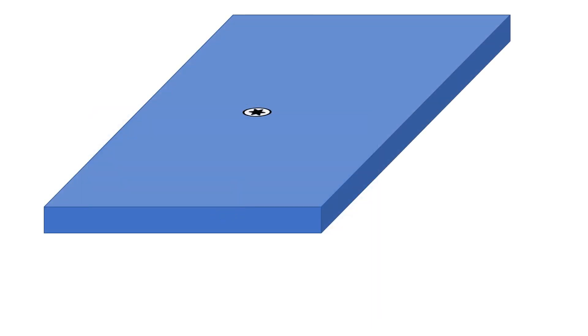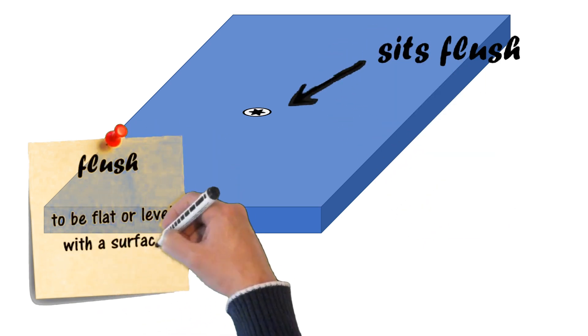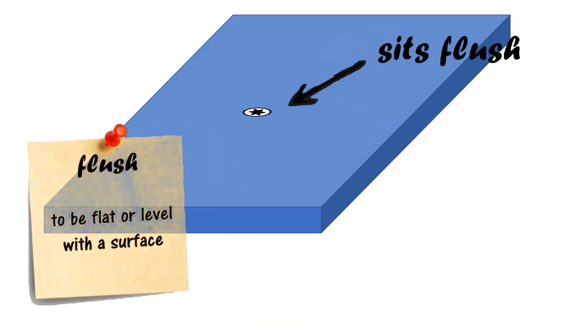An advantage of using a grub screw is that, once it is fastened or tightened, the grub screw will sit flush with the surface of the workpiece.